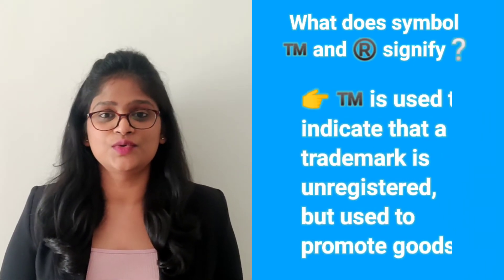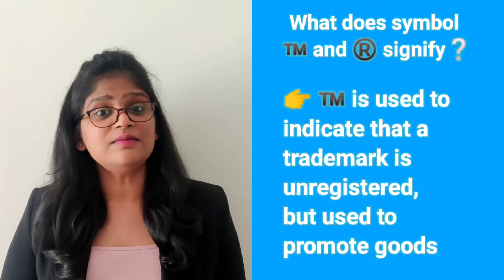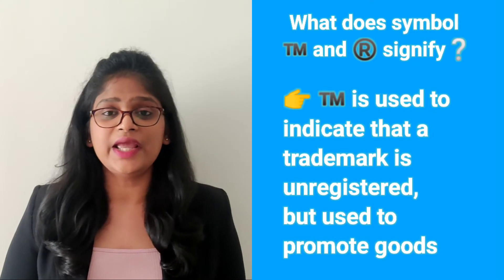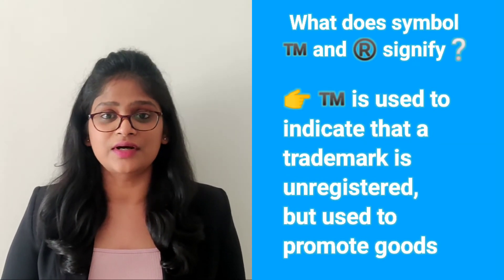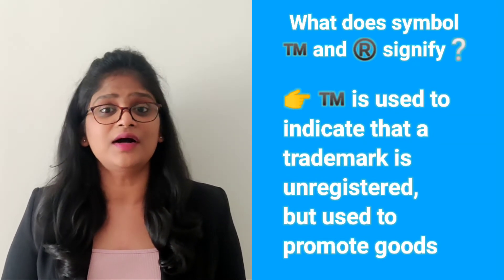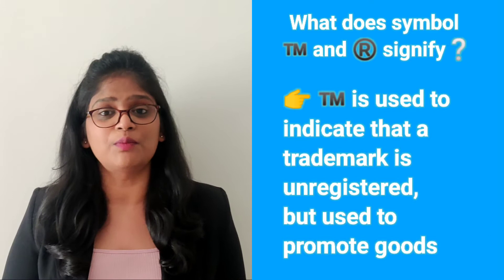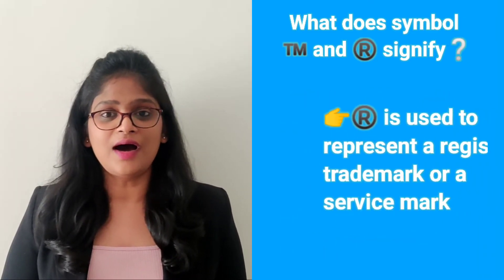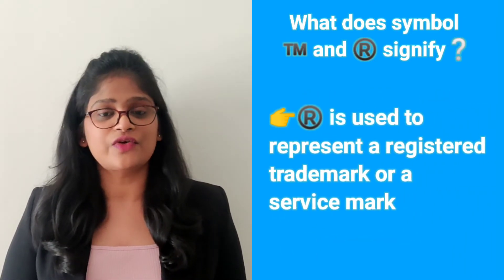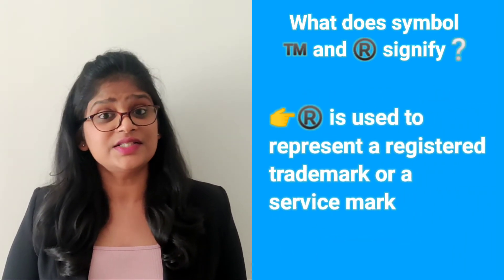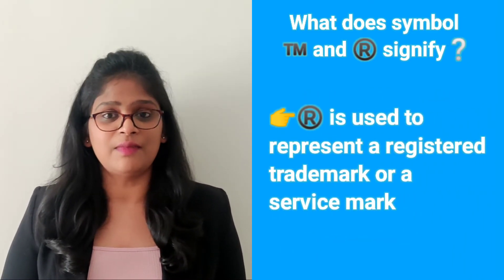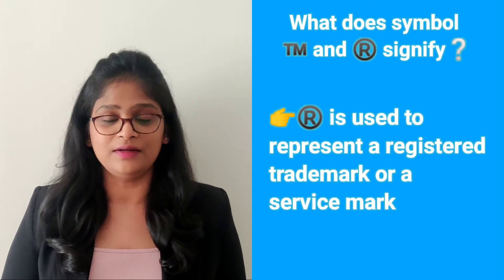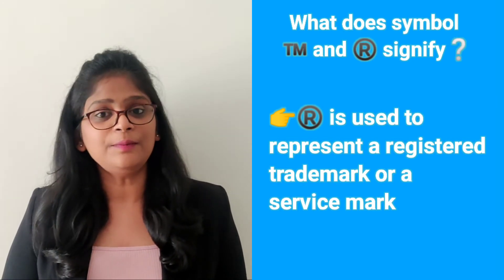What do the symbol TM and symbol R signify, and when can we use them? The symbol TM is used to indicate that the trademark is unregistered but the mark is used to promote goods. The symbol R is used to represent a registered trademark or service mark that provides the applicant complete ownership and legal rights over the trademark or service mark.